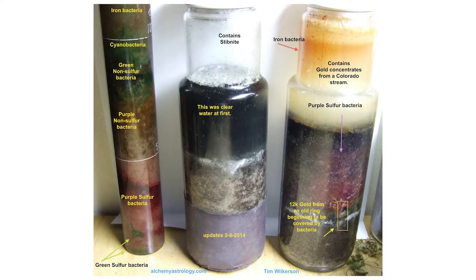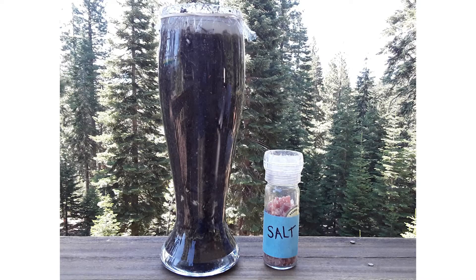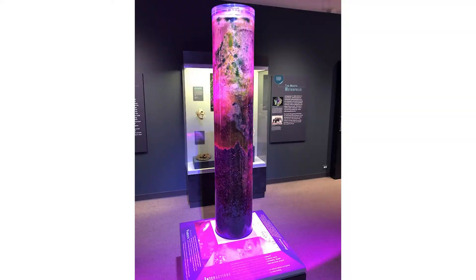You can get creative and try different tubes with different substances to see what processes you can encourage — aerobic or anaerobic. Also try collecting mud from two different areas to compare the microbes found in both locations. Maybe see what happens when you make it more saline with salt, or put one tube in a closet and one in the sun. See what you can discover — there are so many possibilities.